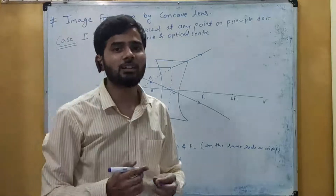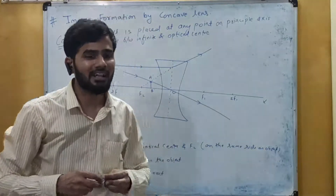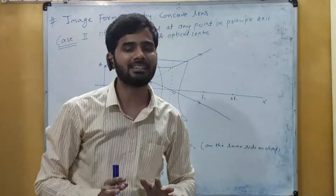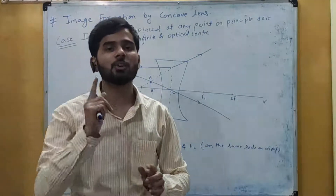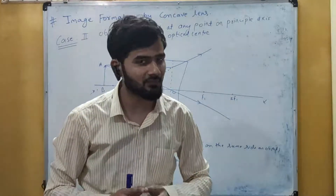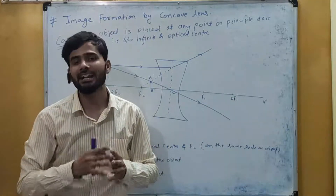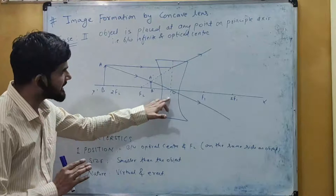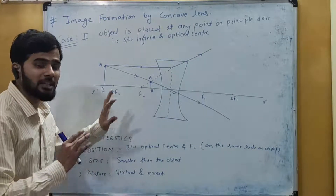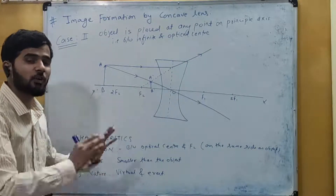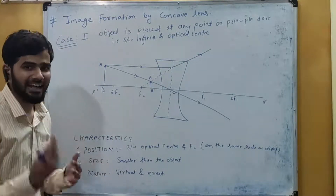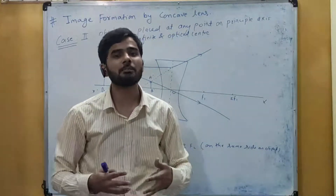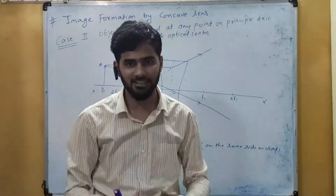So in this way we can draw the image formation for concave lenses. We have only two cases in the case of concave lenses: first, when the object is at infinite, and second, when the object is placed at any point between infinite and the optical center. This is all about the image formation in case of a concave lens.